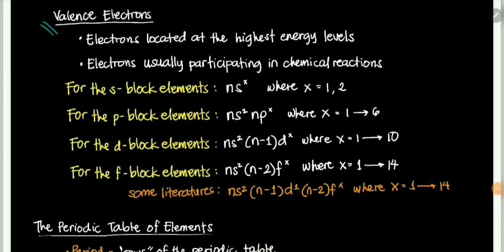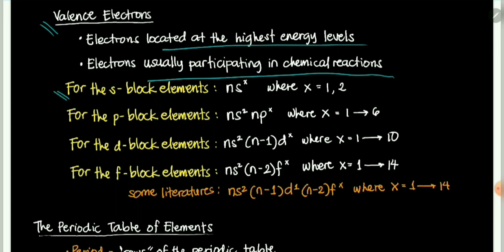Now let's define valence electrons. Valence electrons are electrons located at the highest energy levels — they are the outermost electrons of an atom. Since they are outermost, they interact with the outside environment and usually participate in chemical reactions. For s-block elements, the valence electron configuration is nsx, where n is the highest occupied energy level and x can be 1 or 2.